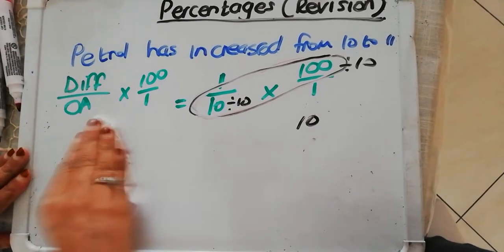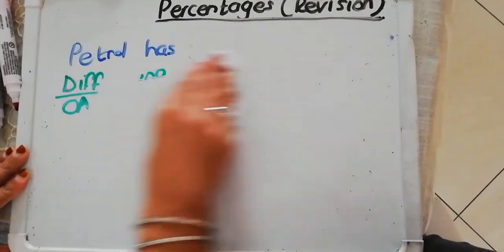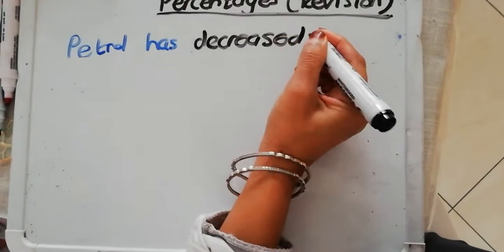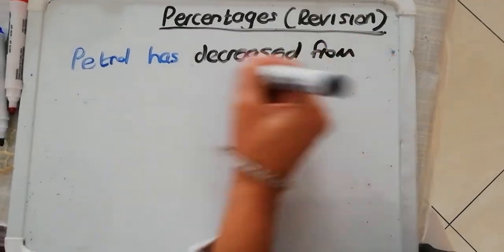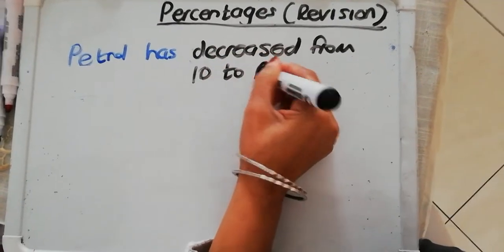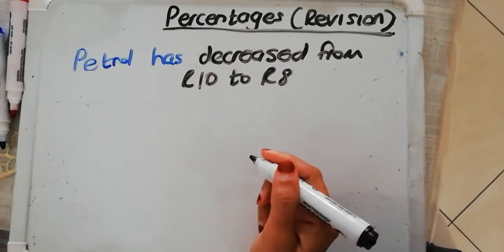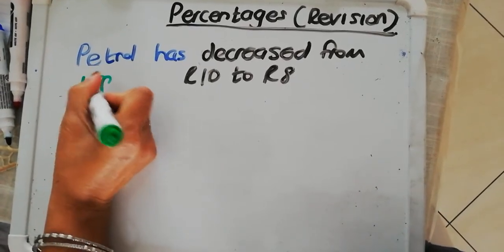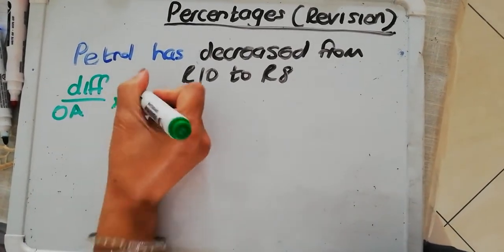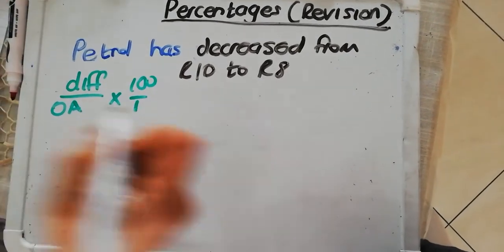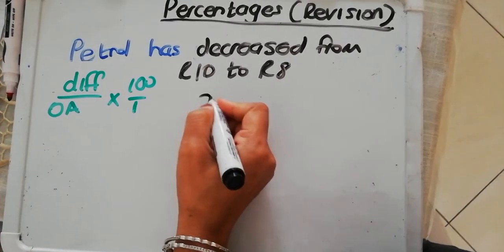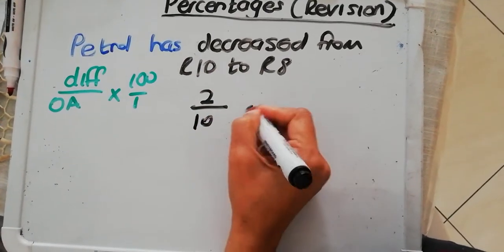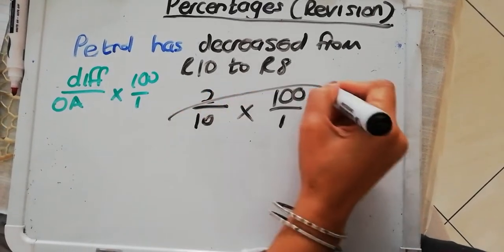Let's look at another example now. What if I say the petrol has decreased now? The petrol has decreased now from 10 rand to 8 rand. And they want to know by what percentage did it decrease? Again, we're going to apply the formula we use. That is, the difference over the original amount times 100 over 1. So that means, what is the difference between 10 and 8 rand? 2 rand. What was the original amount? What was the price of the petrol originally? 10 rand. Times 100 over 1. I cross-simplify.